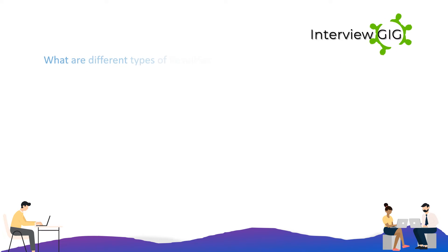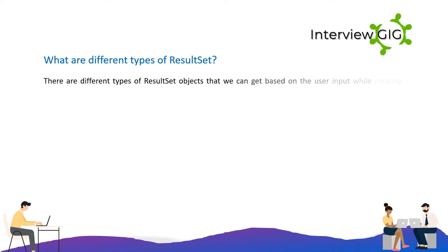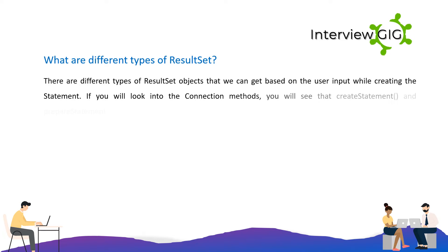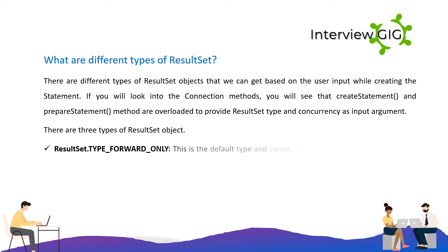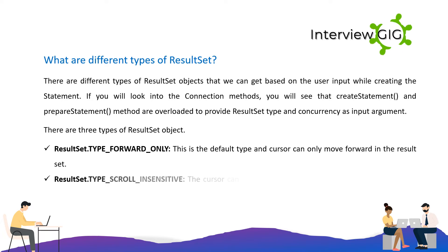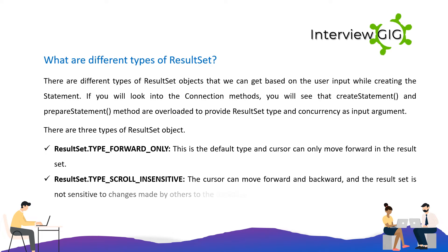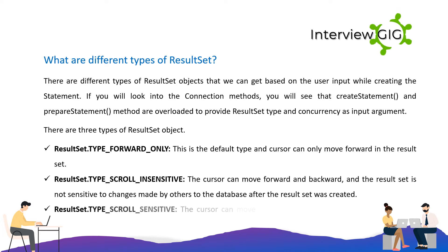What are the different types of ResultSet? There are different types of ResultSet objects based on user input while creating the statement. The create statement and prepareStatement methods are overloaded to provide ResultSet type and concurrency as input arguments. There are three types: ResultSet.TYPE_FORWARD_ONLY — the default type where the cursor can only move forward; ResultSet.TYPE_SCROLL_INSENSITIVE — the cursor can move forward and backward, and the ResultSet is not sensitive to changes made by others to the database after the ResultSet was created.